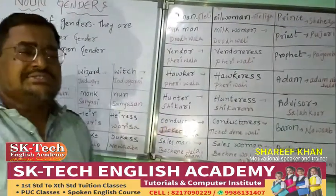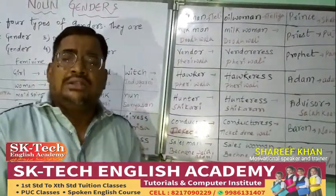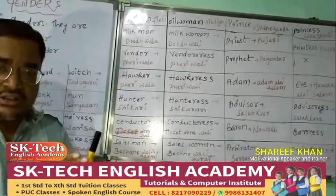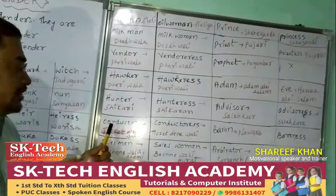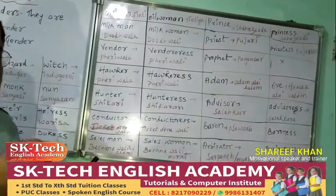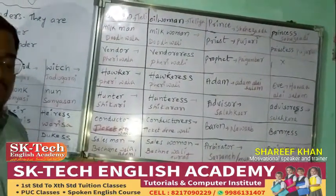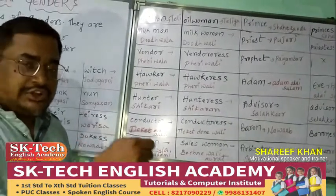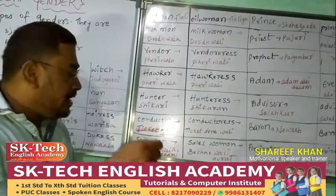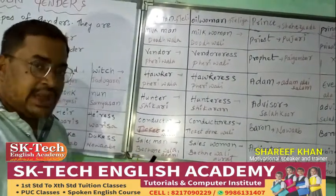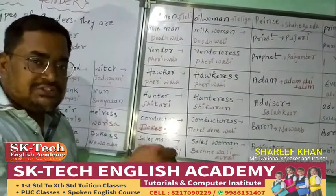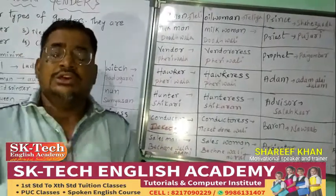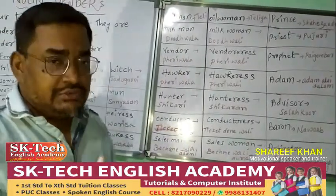Next example: Hunter — masculine form, meaning shikaari. Huntress — feminine form, meaning shikaran. Conductor — the person who issues tickets. The female form is conductress. Salesman — masculine form. Saleswoman or salesgirl — feminine form.